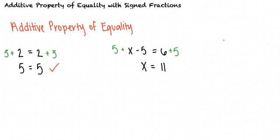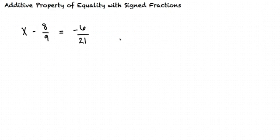Alright, I think I get it, but how about an example? So let's say we're given x minus 8 ninths equals negative 6 over 21 and told to solve for x. So we want to get x by itself, so we add 8 ninths to both sides, right?